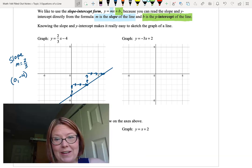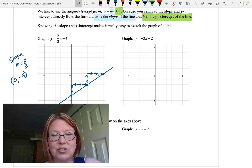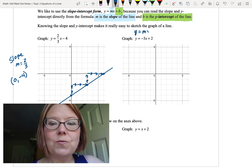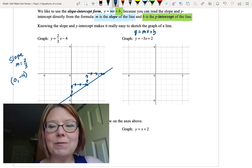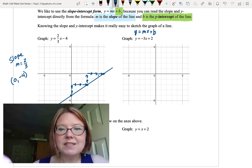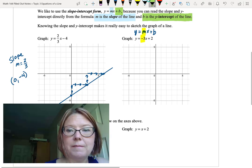The next graph we'll look at is y equals negative 3x plus 2. Again, let's identify the slope and y-intercept from this graph. It might help to write the slope-intercept form directly above it, y equals mx plus b. Then we can see clearly that the slope is negative 3 and the y-intercept is positive 2.